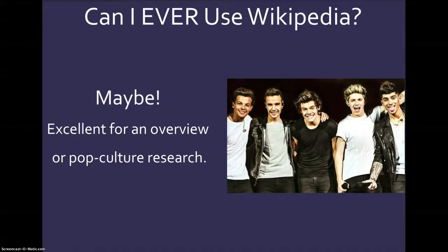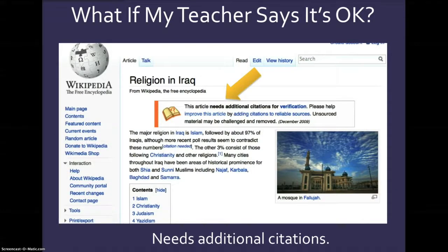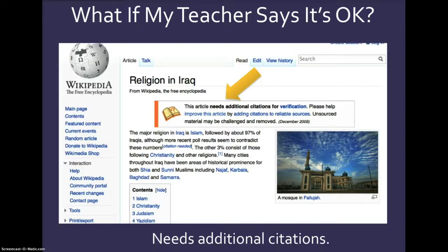Let me show you a few reasons why I don't use Wikipedia as a research source. A lot of teachers say it's okay to use Wikipedia, but there are all kinds of warning signs. For example, this Wikipedia article about religion in Iraq tells you that it needs additional citations for verification, and it says please help improve this article by adding citations to reliable sources. In other words, this is a red flag that you should not use this article for your research.